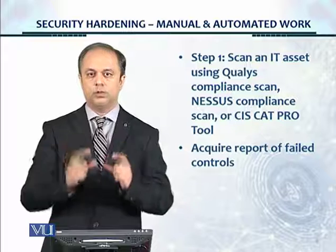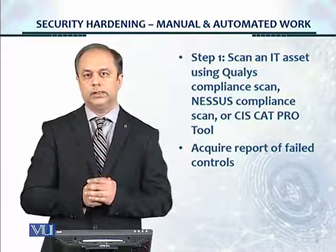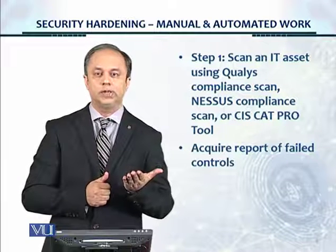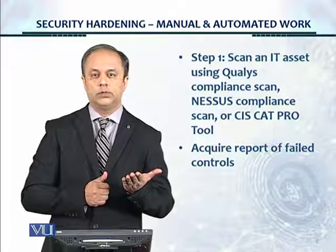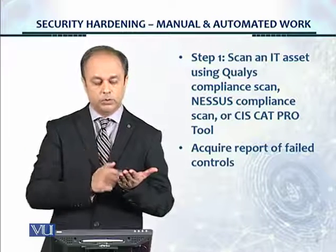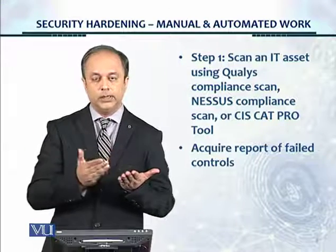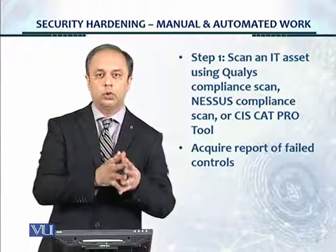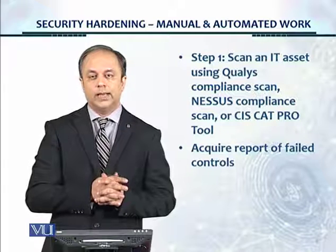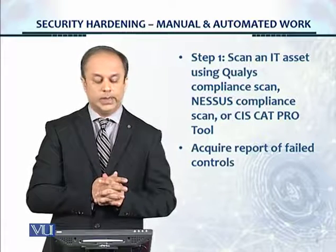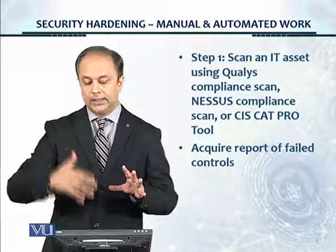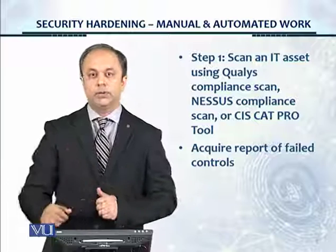Now we should go specifically to the 250 controls that have failed. Open the security benchmark document, download it from the CIS website for Windows Server 2012 R2, look at the reference number for the failed controls, find them, read them, and implement the control on Active Directory or manually as you wish. That is how you implement step number one.